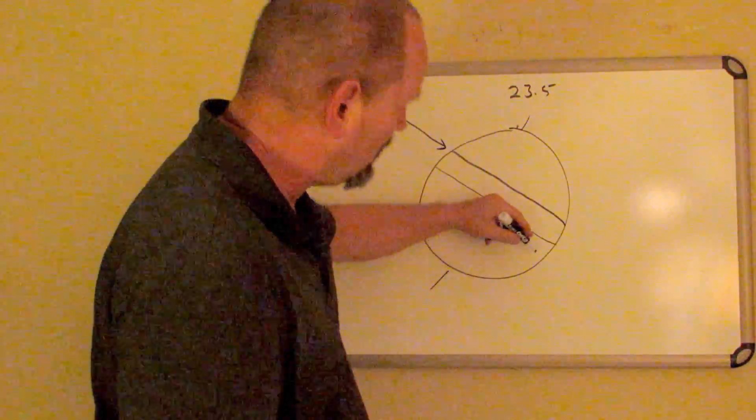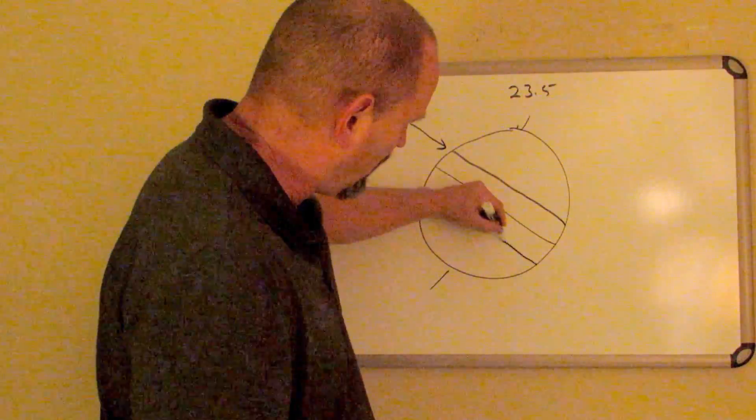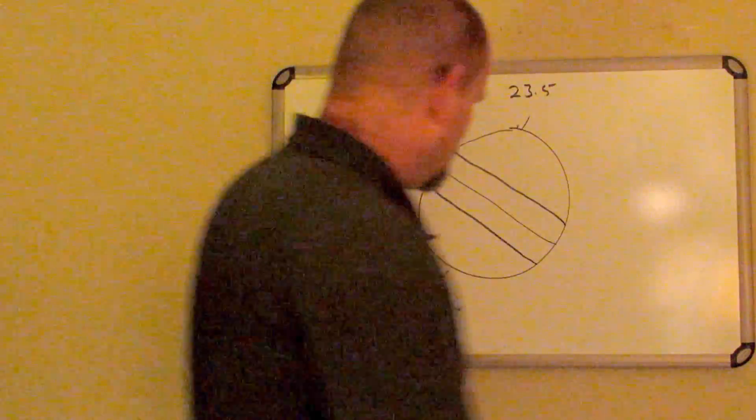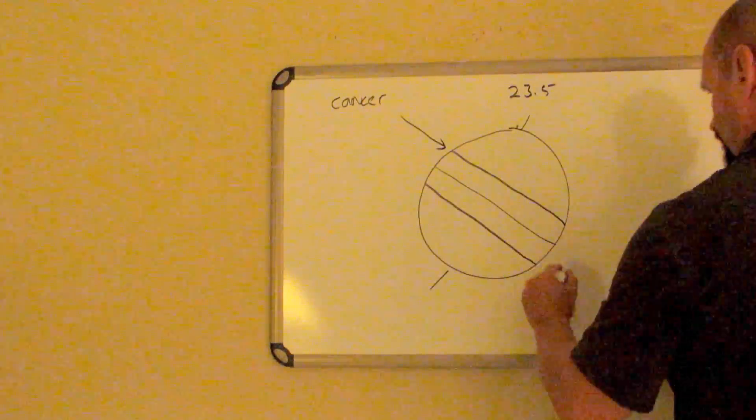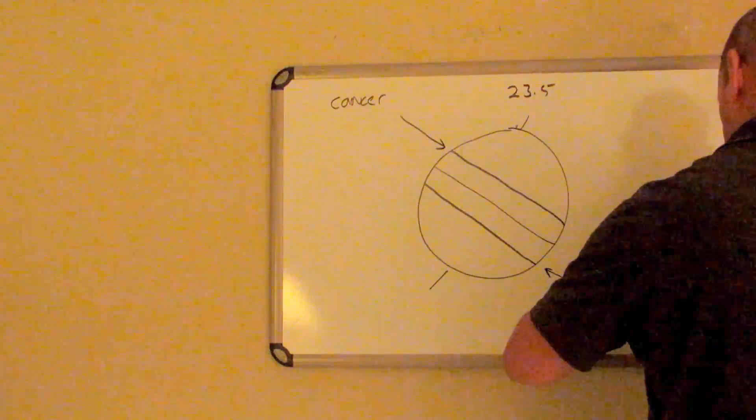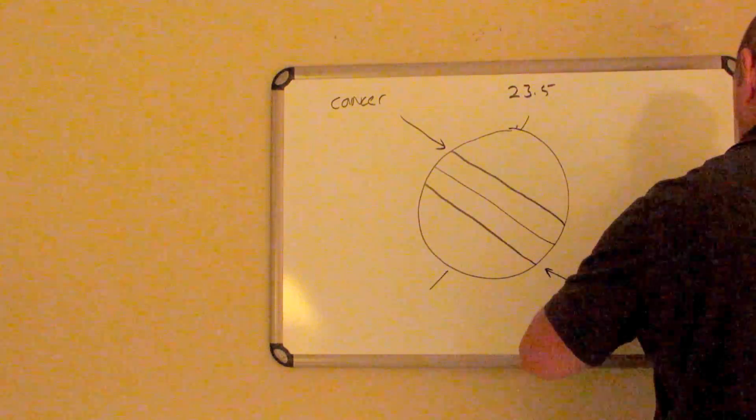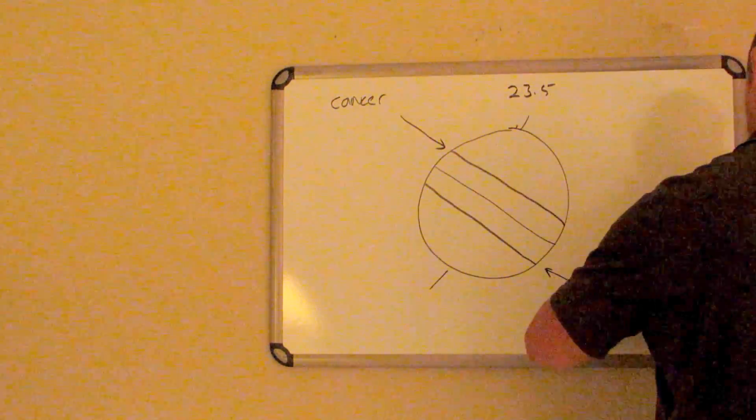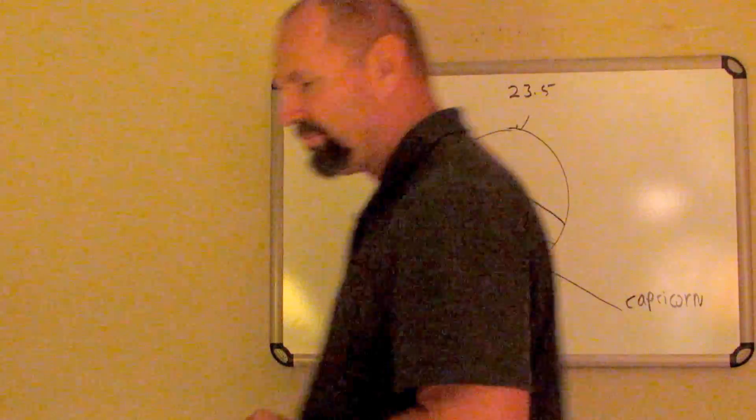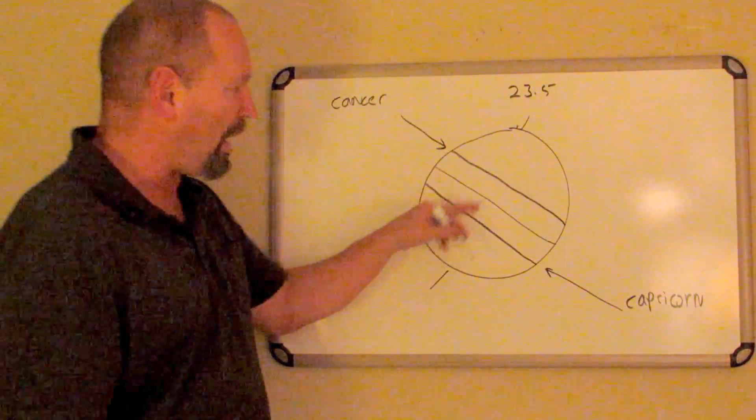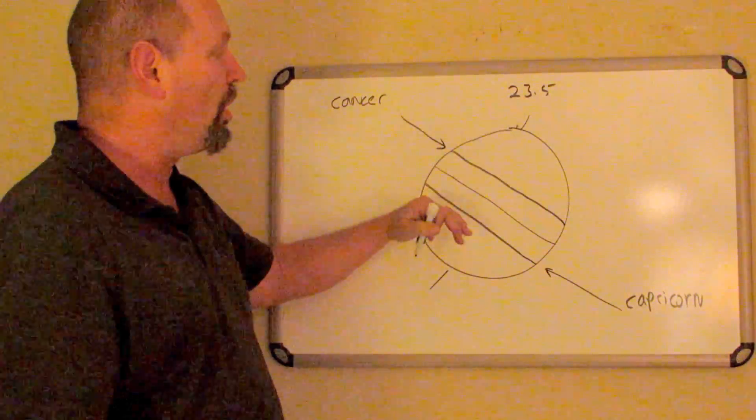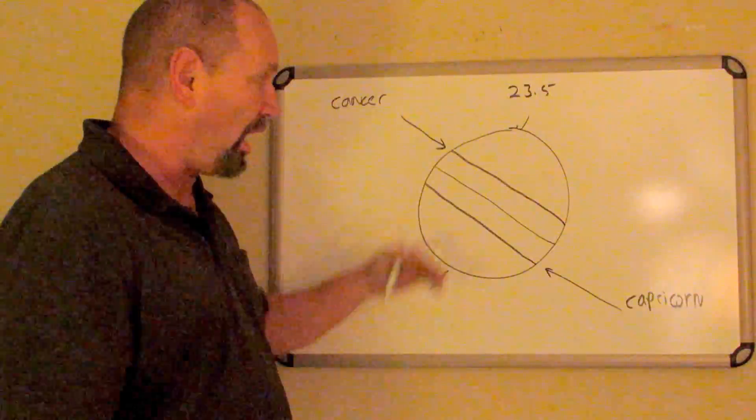We'll just say Cancer for Tropic of Cancer. Below the line, below the equator that is, is another line we call the Tropic of Capricorn. Both of these tropic lines are 23 and a half degrees either north or south of the equator.